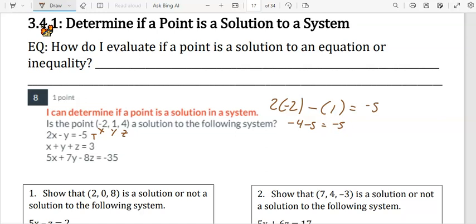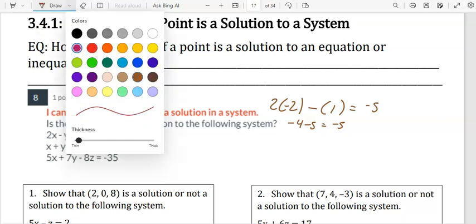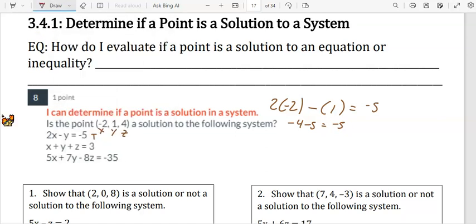Let's do the second equation. Negative 2 plus 1 plus 4 equals 3. Okay, that's also true.